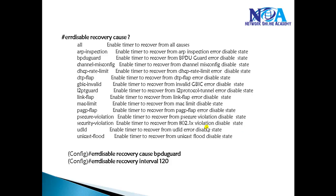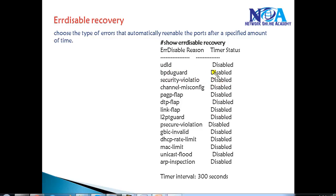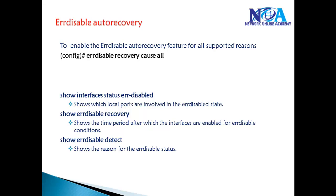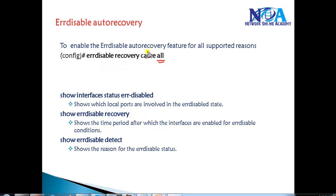Once you enable this command, if you verify with Show Error Disable Recovery, you will see this option as Enabled instead of Disabled. Once you enable BPDU Guard for a specific Error Disable reason, you will see it listed as Enabled. If you want, you can also enable for all causes by using the command errdisable recovery cause all, and it will automatically recover all supported reasons.